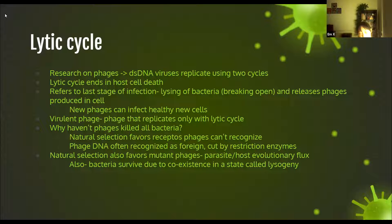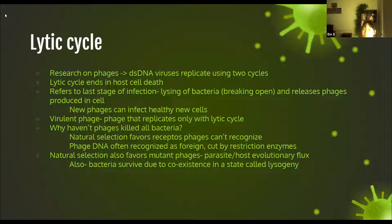We're now going to look at how viruses reproduce. They mostly replicate using two cycles. Bacteriophages are double-stranded DNA viruses, so their genomes are made of the same genetic material as ours. The first cycle is called the lytic cycle, and ultimately this cycle means that their host cell dies. Viruses attach to a host cell, spread their genes into the cell, and the cell reproduces the genes for them through some mechanism, producing new viruses.